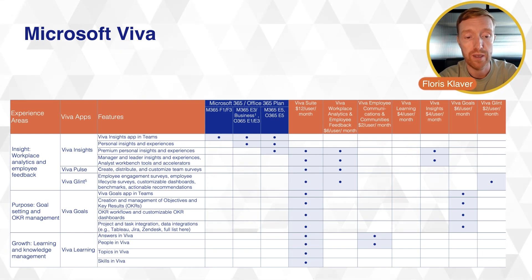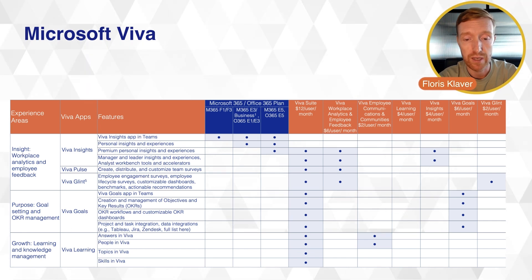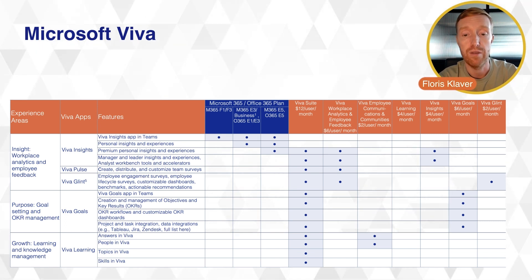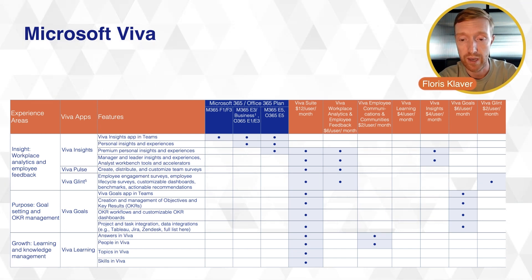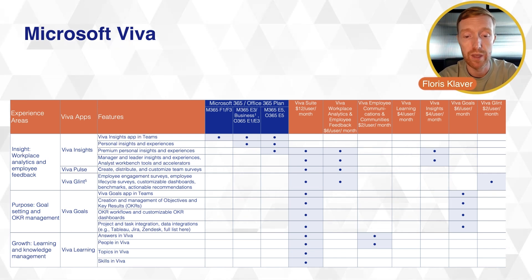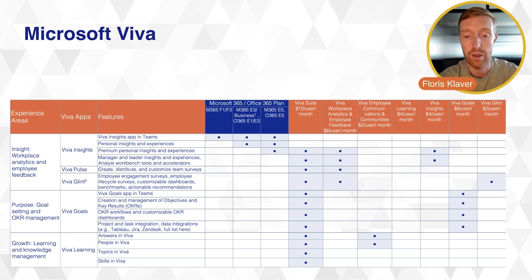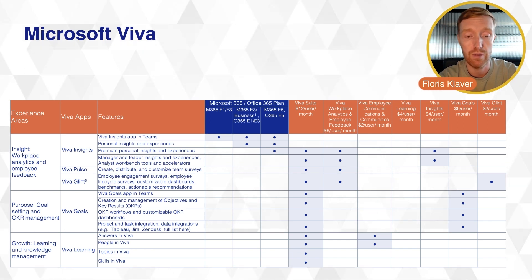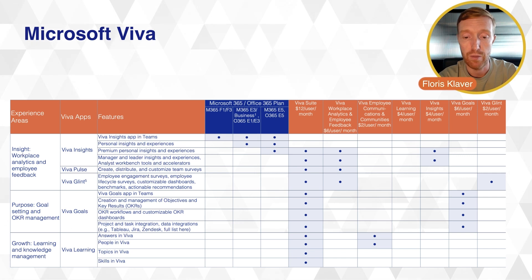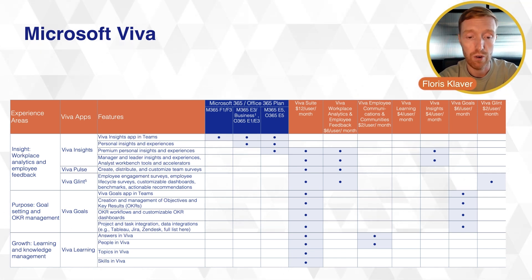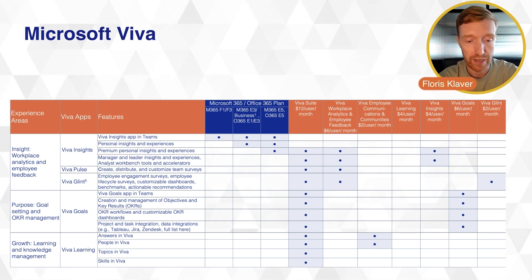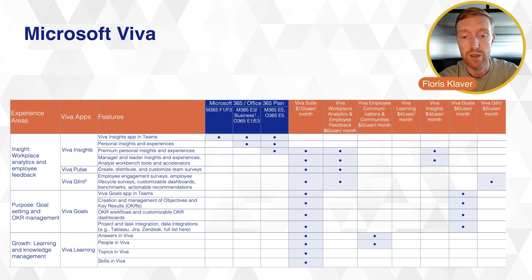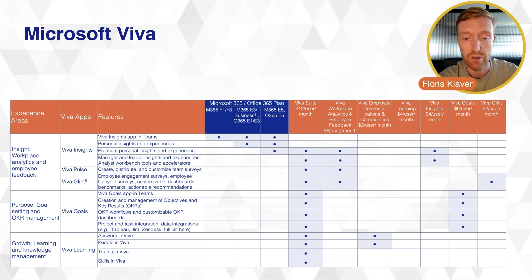On the inside-work aspect of Workplace Analytics and Employee Feedback, Viva Insights is mainly available through Microsoft 365, with just some additional functionality requiring a Viva Suite, Viva Workplace Analytics, or Viva Insights license. Then we have Viva Pulse and Viva Glint, which are only available in their standalone plans or as a Viva Suite license. If you want to create, distribute, and customize team surveys through Viva Pulse, you can only do that by buying the standalone Workplace Analytics license or a Viva Suite license. Viva Glint — covering employee engagement surveys, employee lifecycle surveys, customizable dashboards, and benchmarks — is only available through a Viva Glint, Viva Workplace Analytics, or Viva Suite license.